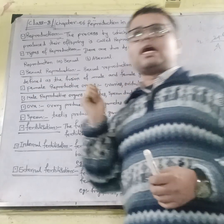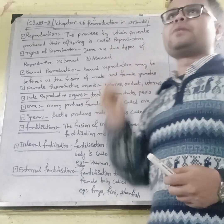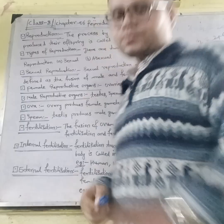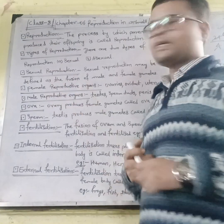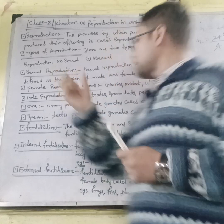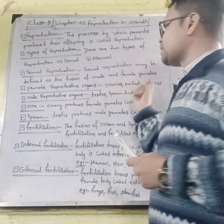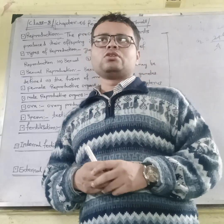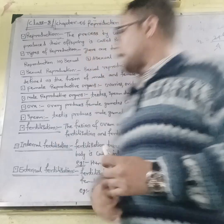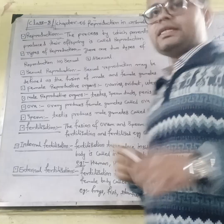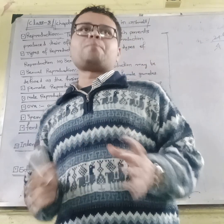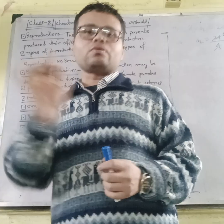The examples of female reproductive organs are ovaries and uterus. What are the male reproductive organs? Testes, sperm ducts, and penis are examples of the male reproductive organs.